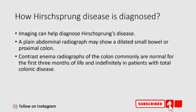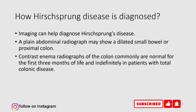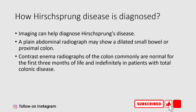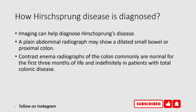How is Hirschsprung's disease diagnosed? Imaging can help diagnose Hirschsprung's disease. A plain abdominal radiograph may show a dilated small bowel or proximal colon. Contrast enema radiographs of the colon are commonly normal for the first three months of life, and indefinitely in patients with total colonic disease.